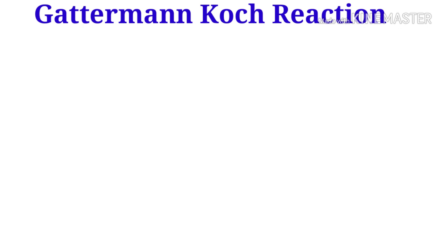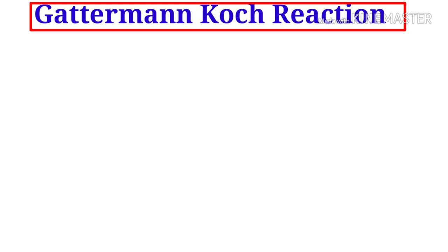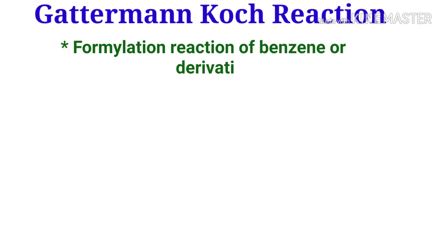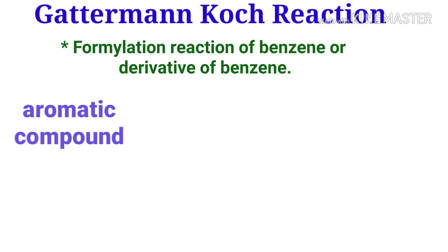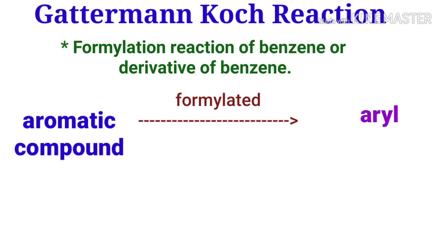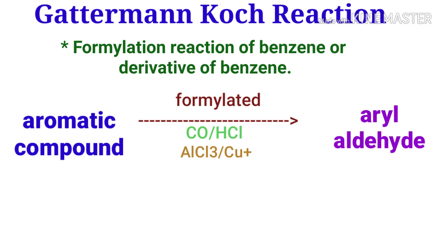The Gattermann-Koch reaction is a formylation reaction of benzene or a derivative of benzene. It is a chemical reaction in which aromatic compounds are formylated to produce an aryl aldehyde by using carbon monoxide and hydrogen chloride as reactants. The whole reaction is catalyzed by a Friedel-Crafts Lewis acid, that is aluminum trichloride (AlCl3), in the presence of a trace amount of Cu⁺ ion, generally cuprous chloride (Cu2Cl2).